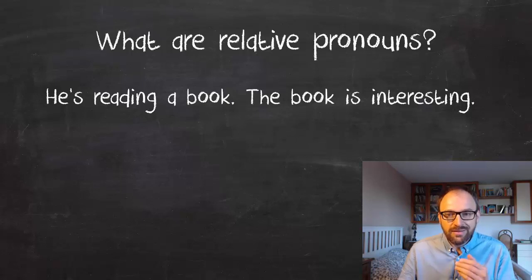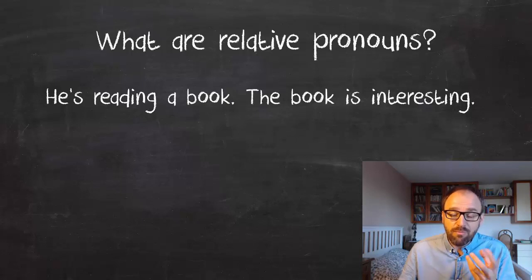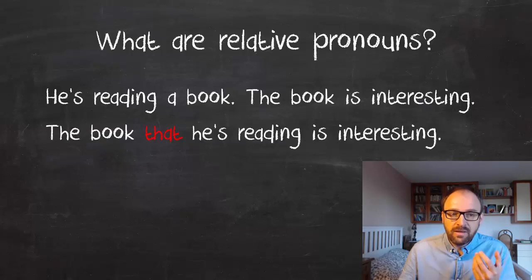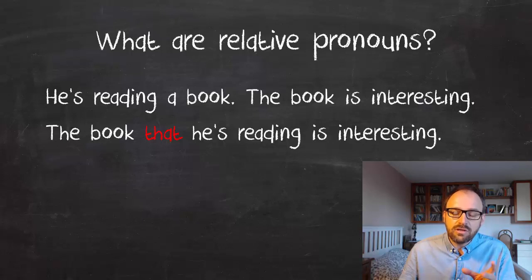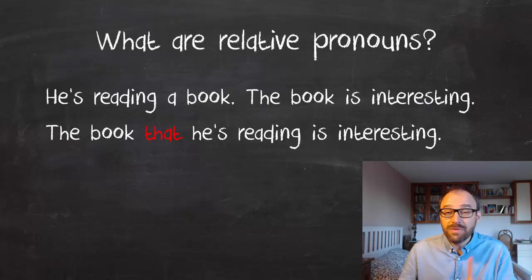He's reading a book. The book is interesting. Those are two separate sentences. A relative pronoun can connect these two sentences and replace 'the book' with 'that': the book that he's reading is interesting. Other relative pronouns in English are, for example, 'which' or 'who'. And by the way, in English you often omit the relative pronoun — for example, 'the book he's reading is interesting' — without 'that'. In German, that is not possible. You always have to use the relative pronoun.